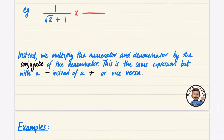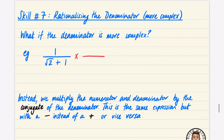So I'm going to try multiplying by the same expression but with a negative sign. Of course you need to do the same on the top and bottom because we need to multiply by one overall. I find it really helpful to put brackets around everything, because when I see brackets it reminds me to do the full bracket expansion. The numerator is super easy — it's just one multiplied by root two minus one.